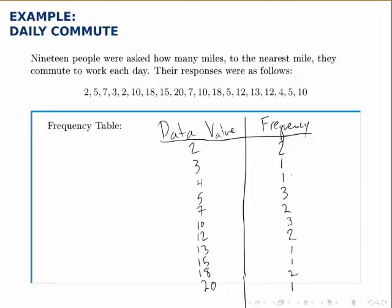It's really as simple as that. Once we've filled in the frequency table, a quick check is to add up all the frequencies — they should add up to how many data points we have. Here, if we add up the frequencies, we do find a total of 19.